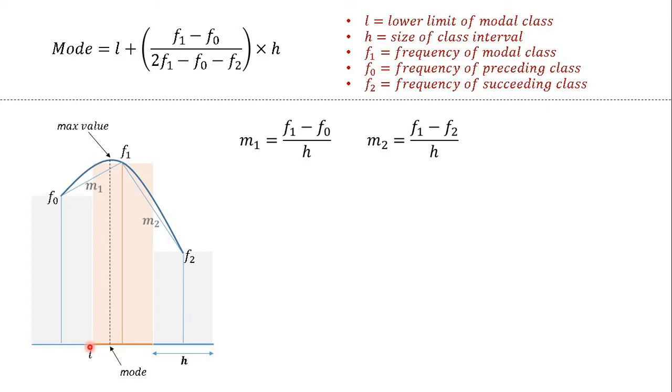So here tangent at L, lower limit L, is equal to M1, why? Because L is the midpoint of the domains corresponding to these two points, right, L is the midpoint of these two points.